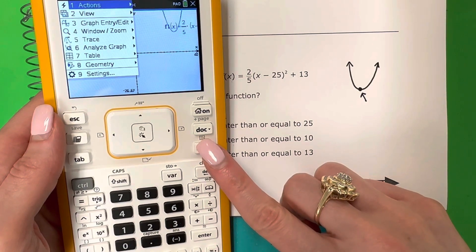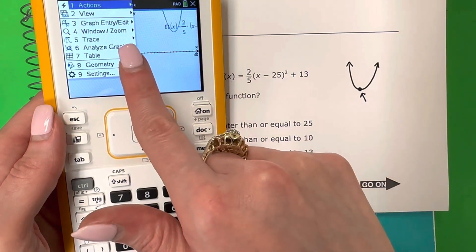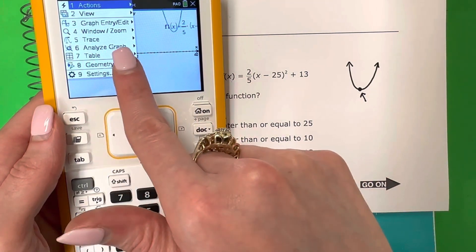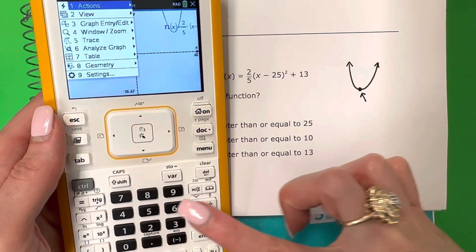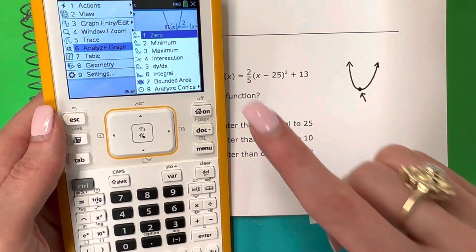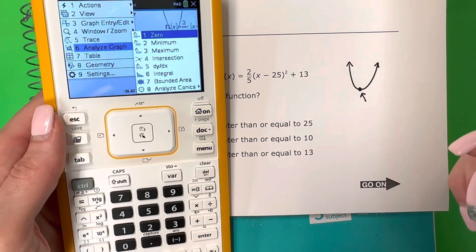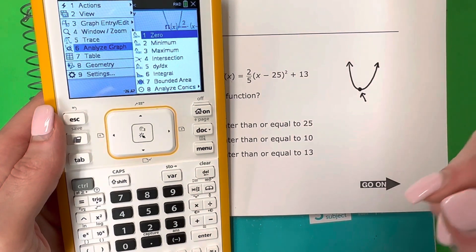I need to find the vertex, and how you do that with the calculator is you're going to push menu, and I want to analyze the graph, so that would be number 6. And to find the vertex, you actually need to find the minimum or the maximum.